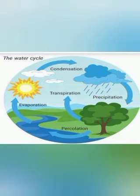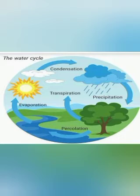Now let us step into the topic of the water cycle. The water cycle — another name is the hydrological cycle. The water cycle is simply defined as the change of water from one form to another. Water continuously moves from the surface of the earth into the atmosphere and then back from the atmosphere to the surface of the earth. This process is known as the water cycle.